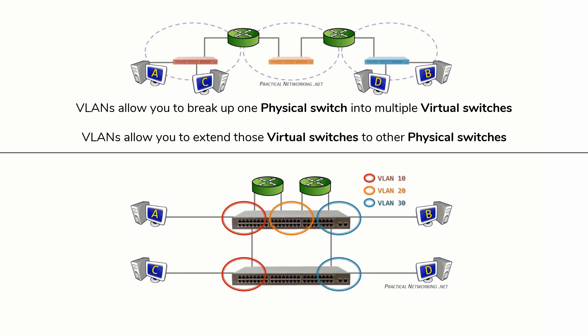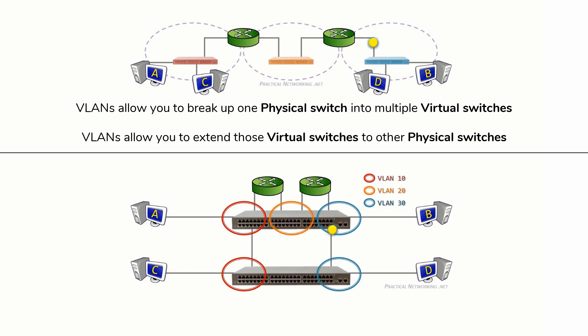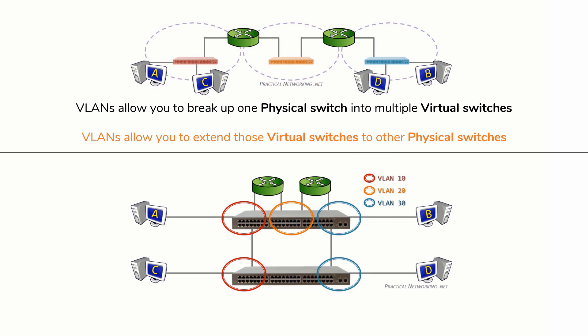Either way, a packet from host C to host D goes through the red switch, or VLAN 10, then through this router, then through the orange switch, or VLAN 20, then through this other router, then finally through the blue switch, or VLAN 30, before it arrives at host D. In summary, the two major functions of VLANs are: VLANs allow you to break up one physical switch into smaller virtual mini-switches, and VLANs allow you to take those virtual mini-switches and extend them across other physical switches.